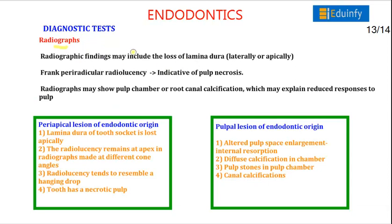Radiographic findings include loss of lamina dura laterally or apically indicating pulp involvement; frank periradicular radiolucency indicates a necrotic pulp. Pulp chamber or root canal calcification may explain reduced responses to pulp testing. In periapical lesions of endodontic origin, lamina dura is lost apically, radiolucency at the apex tends to resemble a hanging drop, and the tooth has a necrotic pulp. In pulpal lesions of endodontic origin, there is altered pulp space enlargement seen in internal resorption, diffuse calcification in chambers, pulp stones in pulp chambers, or canal calcification.